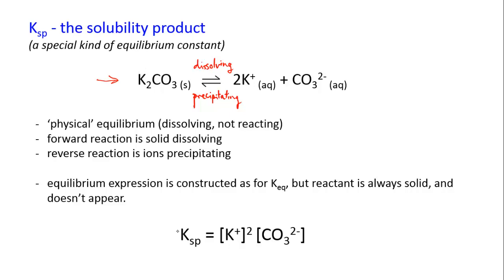For potassium carbonate, we use K_sp — the solubility product — instead of K_eq; it's exactly the same thing, just a different name for this particular kind of equilibrium. So K_sp equals the concentration of the potassium ion raised to the power of 2 (its stoichiometric coefficient) multiplied by the concentration of the carbonate ion. The solid reactant is ignored and doesn't appear in the expression.